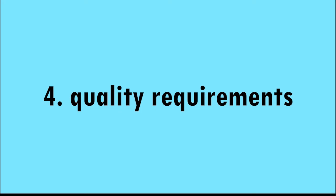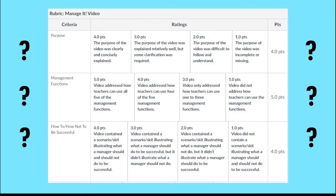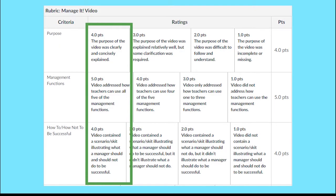The final element of planning is quality requirements — what criteria must each project task meet? To achieve this, you should always make a rubric for you and your team so you know you are on the right track. That way, you know the quality you and your team are looking for, and you are part of the task. Once you finish this part, you have successfully planned your project.